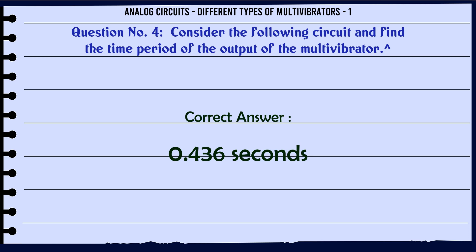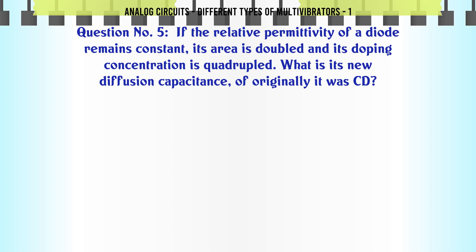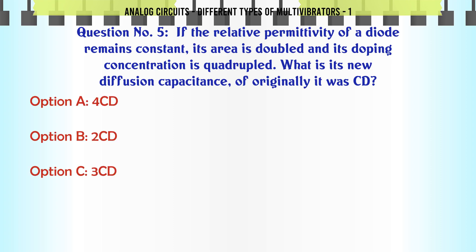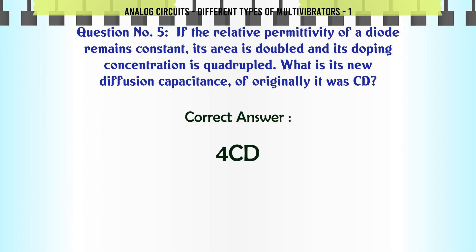If the relative permittivity of a diode remains constant, its area is doubled and its doping concentration is quadrupled, what is its new diffusion capacitance if originally it was CD? A: 4CD. B: 2CD. C: 3CD. D: CD. The correct answer is 4CD.